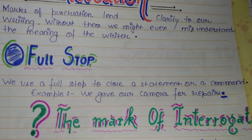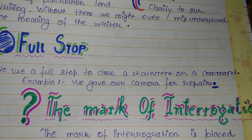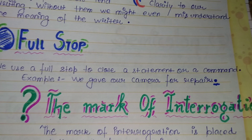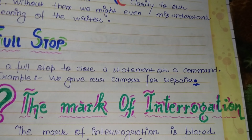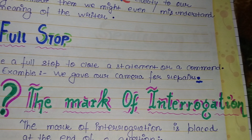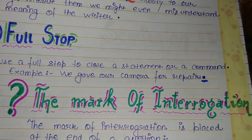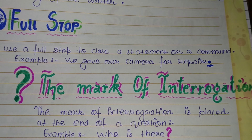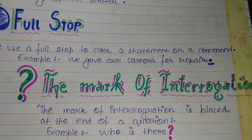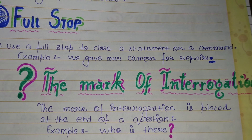The second one is the mark of interrogation. The mark of interrogation is placed at the end of a question. For example: 'Who is there?'